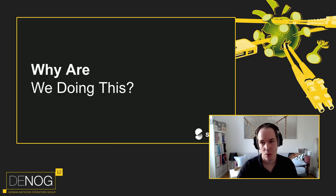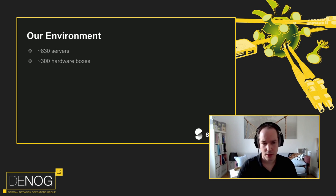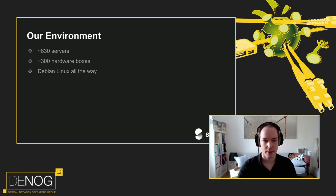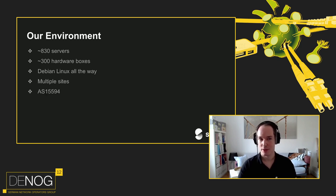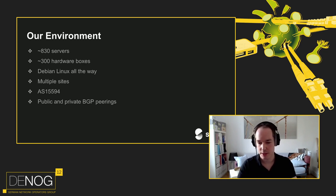Why are we doing this? First, some facts. We operate around 830 servers, 300 of which are actual hardware boxes. We run Debian Linux all the way as our main distribution across multiple sites. Since this is a DENOG session, our AS is 15594. We operate public and private BGP peerings, transit, IPv4, IPv6, and private voice peerings to other carriers.